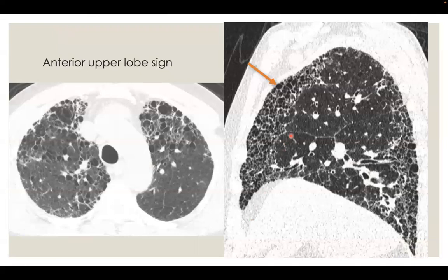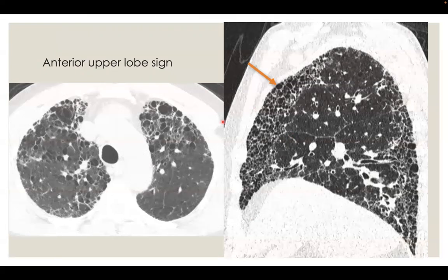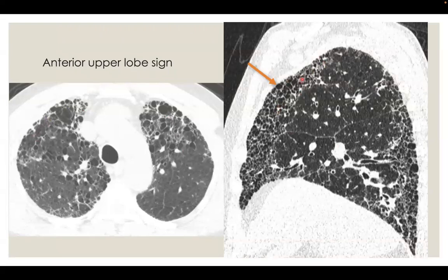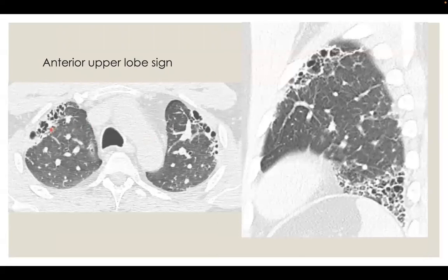Features that suggest a typical UIP pattern is secondary to connective tissue disease — we have four signs. First, the anterior upper lobe sign: honeycombing is present anteriorly in the upper lobes, as seen in this axial cut and confirmed in the sagittal view showing honeycombing in the anterior portion of the upper lobes. This is called the anterior upper lobe sign. Here is another example showing the anterior upper lobe sign.